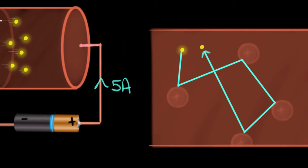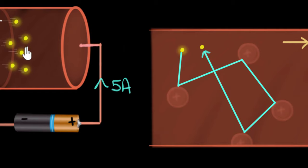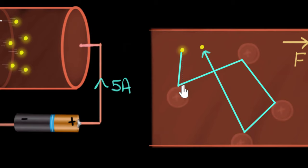So now: what happens when you do put a battery? Because of the battery, the electrons will experience a force and they will accelerate — in the direction toward the positive terminal of the battery. You can also think in terms of electric field. As a result, the electron will now take a slightly different path. Because it is being accelerated to the right, instead of bouncing straight back, it bounces a little bit toward the right — that's the new path.